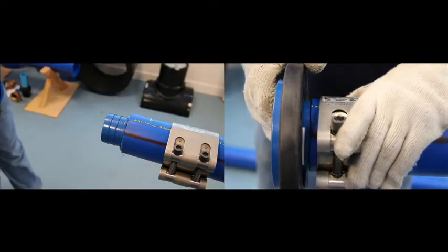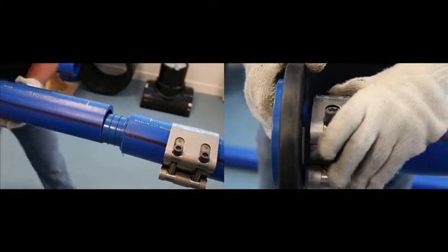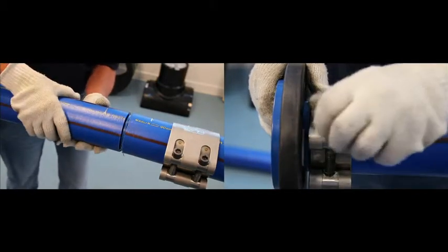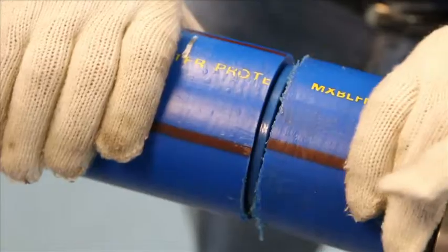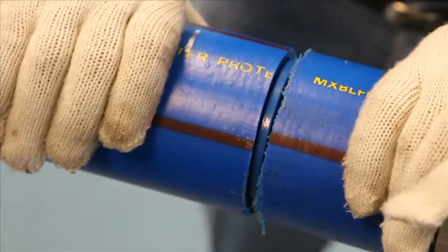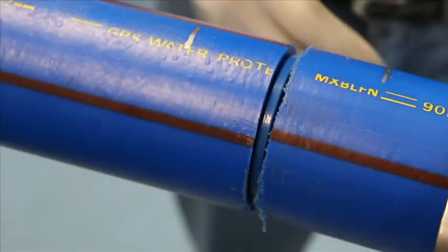For the couplers, slide the second pipe end onto the insert, and then push the pipes together. Ensure that both pipes are up against the pipe stop of the insert and are correctly aligned.